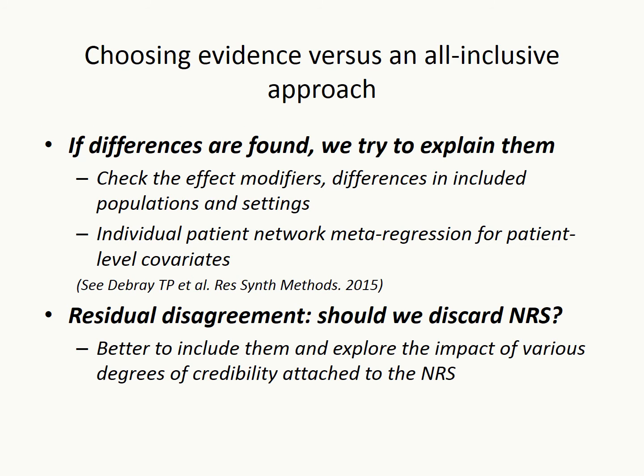What should be done when differences between randomized and non-randomized studies are found? Investigators should look for the sources of this disagreement and evaluate the comparability of effect modifiers between the various sources of evidence. A network meta-regression model, ideally with individual patient data, could improve agreement. If discrepancies remain small even after adjusting for covariates, we think it is better to include non-randomized studies rather than discard them, and explore the impact of various degrees of credibility attached to them.